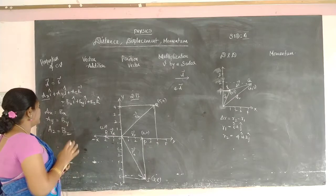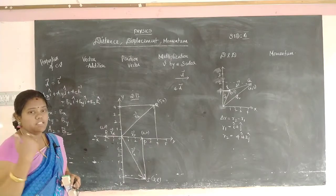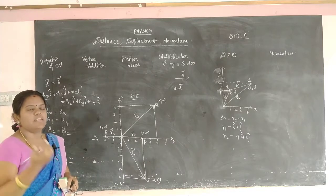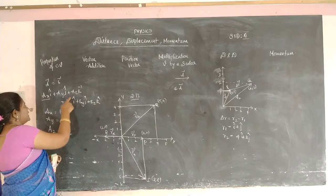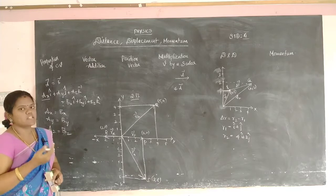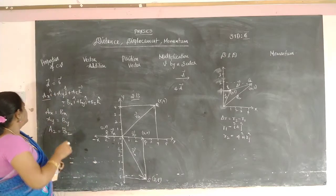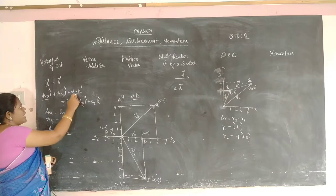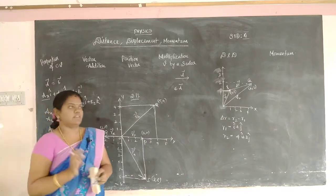This is the property of components of a vector. Take two vectors, write them with X, Y, and Z components multiplied by unit vectors: Ax·i + Ay·j + Az·k = Bx·i + By·j + Bz·k. When two vectors are equal, automatically the components are equal: Ax = Bx, Ay = By, Az = Bz. This is the property of components of a vector.